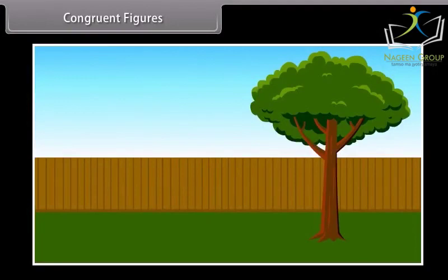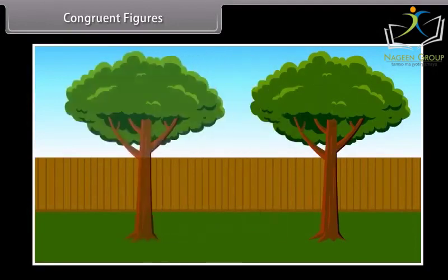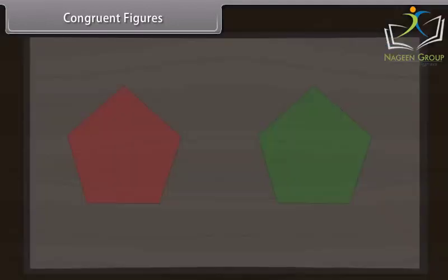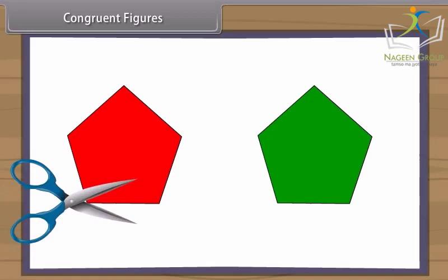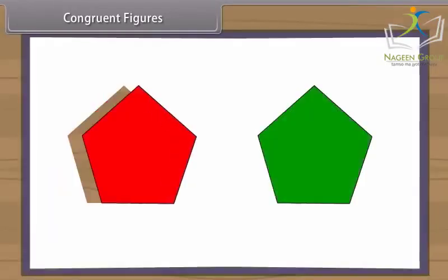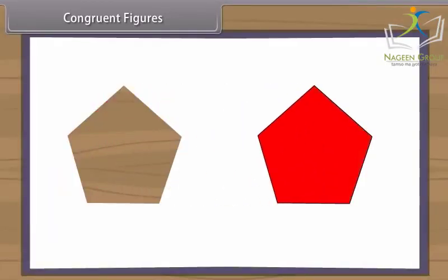Congruent objects are duplicates of one another. If two mathematical figures are congruent and you cut one figure out with a pair of scissors, it will fit perfectly on top of the other figure.